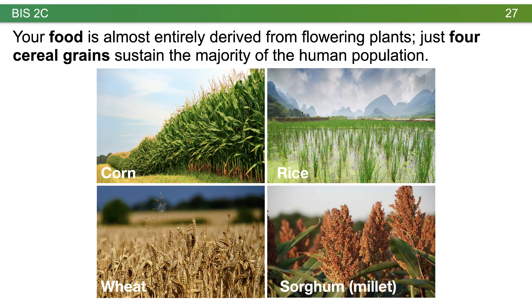Caryopsis is when the ovary wall and seed coat are fused. This is critically important because just four cereal grains — corn, rice, wheat, and millet (sometimes barley) — sustain the majority of the human population. Each of these does caryopsis. Notably, all four of these are monocots, underscoring how important monocots are to sustaining the human population.